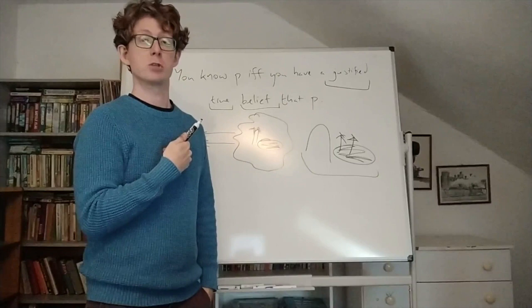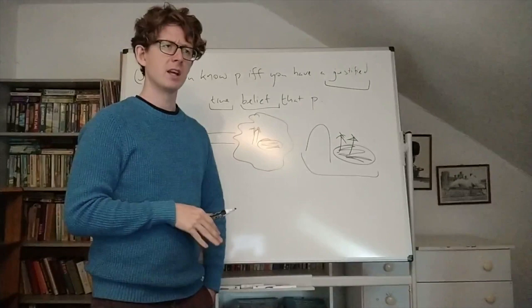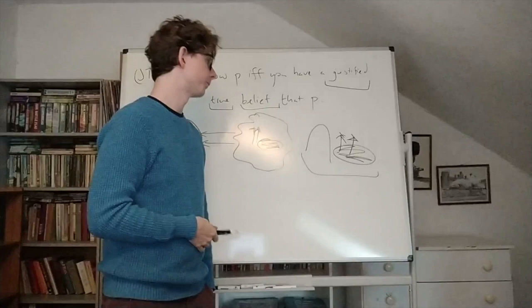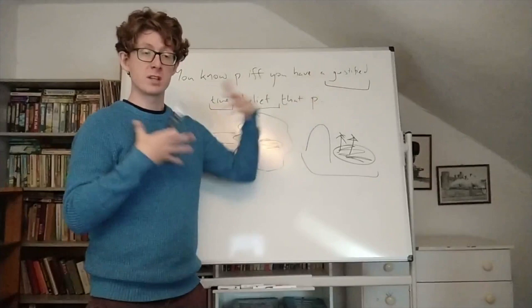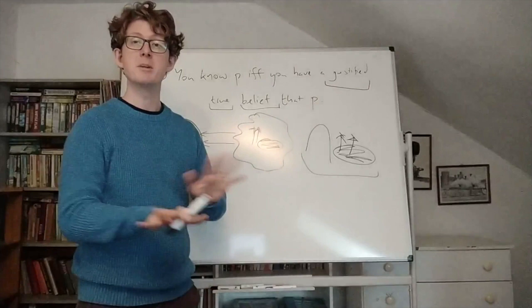Now, in this case I get unlucky in a very subtle way, in that the evidence I have would in usual situations be misleading. But it just so happens that the kind of bad luck of the mirage is sort of cancelled out by how facts actually turn out to be on the ground. So we do want to say I'm justified because things really do seem to me like there's an oasis in the distance and I have no reason to be suspicious of how things seem to me to be.